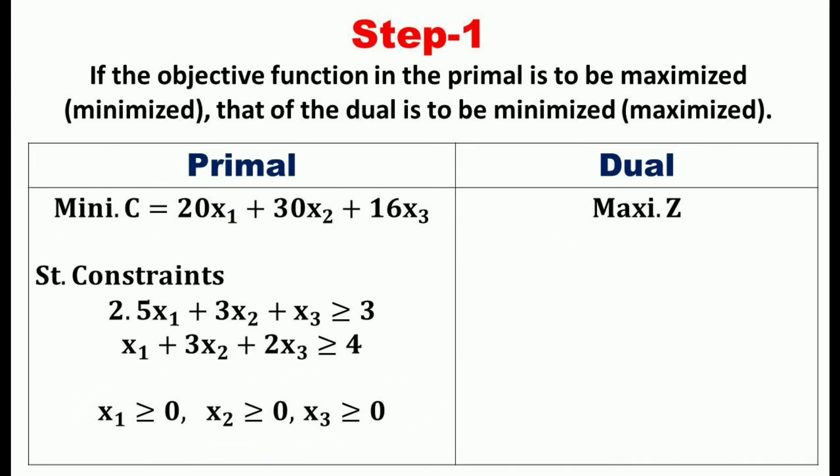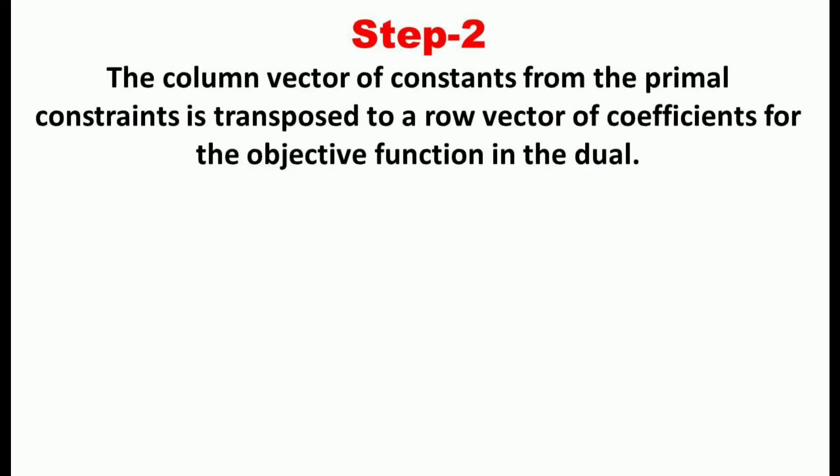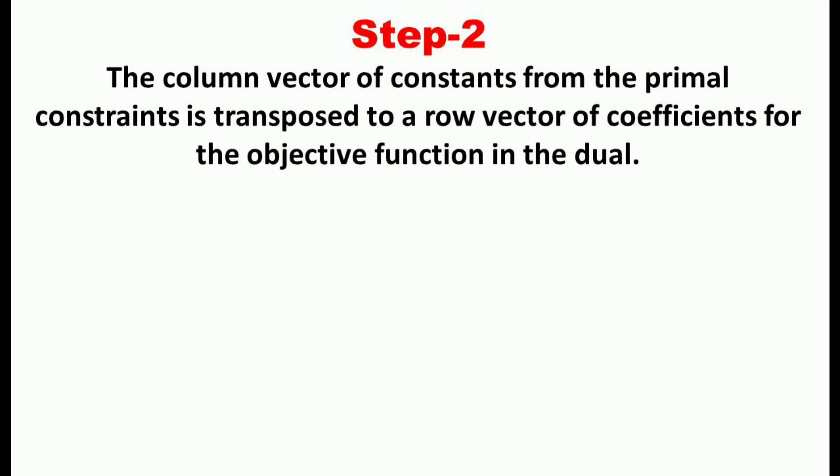Since the primal objective function is minimization, the dual objective function is maximization of profit. By the second step, the column vector of constants from the primal constraints — 3 and 4 — are transposed to a row vector of coefficients for the dual objective function. Therefore the dual objective function is: maximize z = 3y1 + 4y2. Note that we have only two decision variables y1 and y2 in the dual, because the number of variables in the dual equals the number of constraints in the primal, which is two.